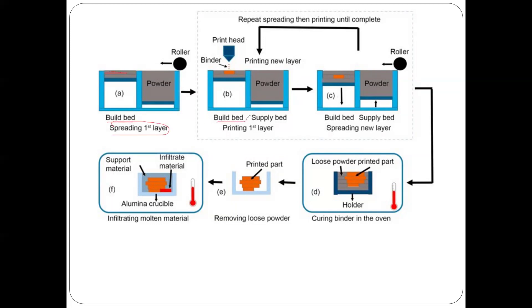Then after that the print head will come and deposit the binder in liquid form, and it will selectively bind the powder material. Then another layer of powder particles will be spread through the roller, and the process will carry on until the whole object is created.